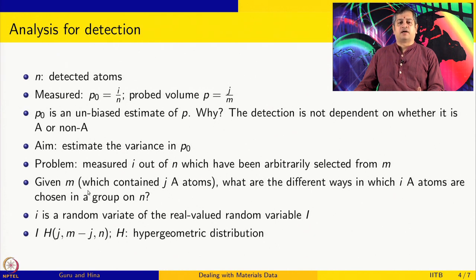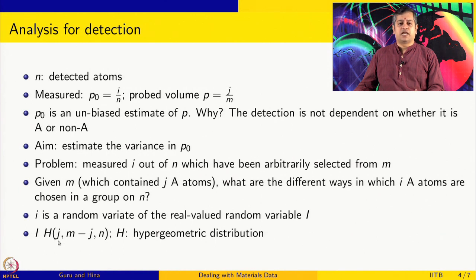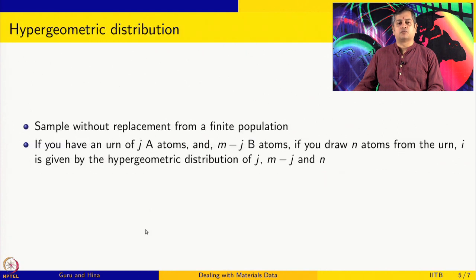We know there were M atoms, out of which N got detected. Among those N, what are the different ways in which I of them happen to be A atoms? Here, I is a realization of a random variable — capital I — and that distribution is called the hypergeometric distribution, with parameters J, M minus J, and N. The hypergeometric distribution answers: given M atoms containing J A-atoms, in how many ways can I A-atoms be chosen in a group of N? It is called sampling without replacement from a finite population.